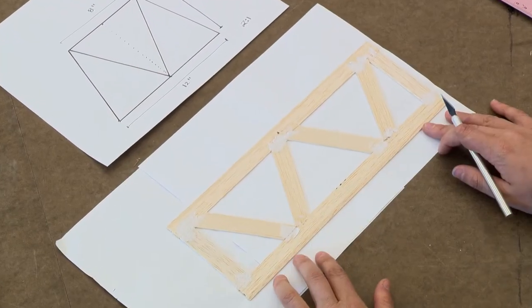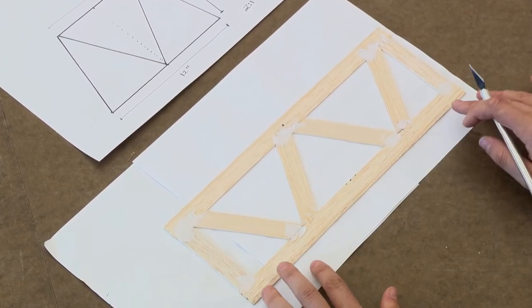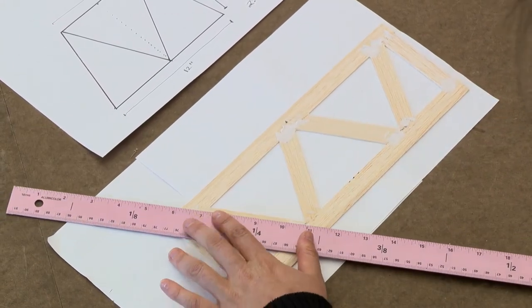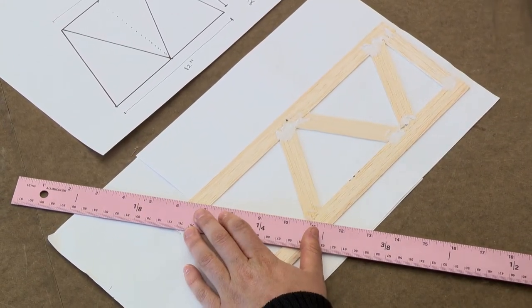So here I have the bottom of the bridge, which I also constructed in a truss formation. And what I'm going to do now that the glue is dried is cut away the paper.